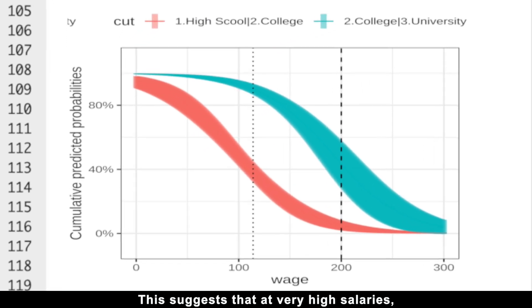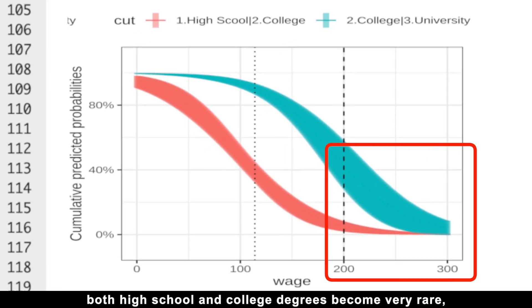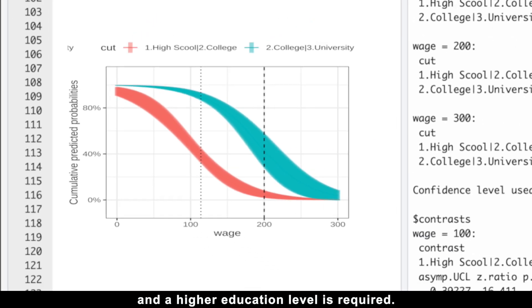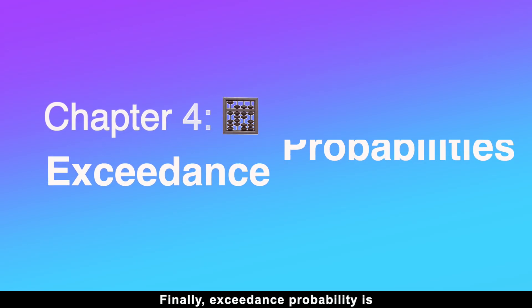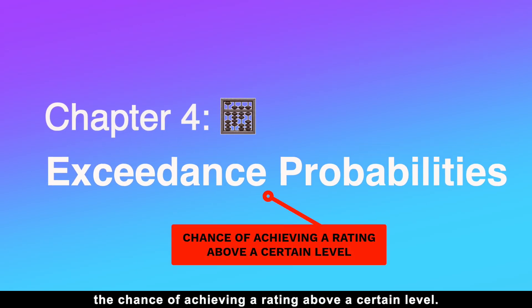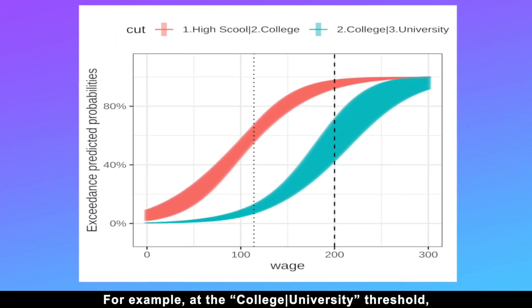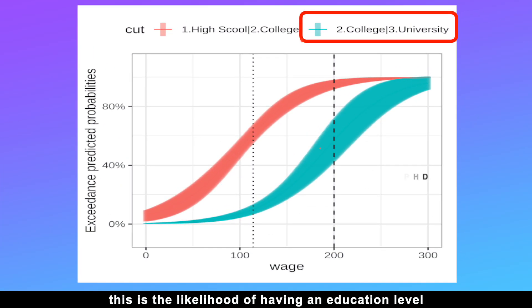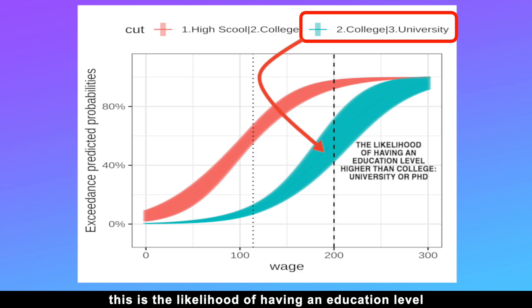This suggests that at very high salaries, both high school and college degrees become very rare, and a higher education level is required. Finally, exceedance probability is the chance of achieving a rating above a certain level. For example, at the college-university threshold, this is the likelihood of having an education level higher than college — in this case, a university degree or a PhD.